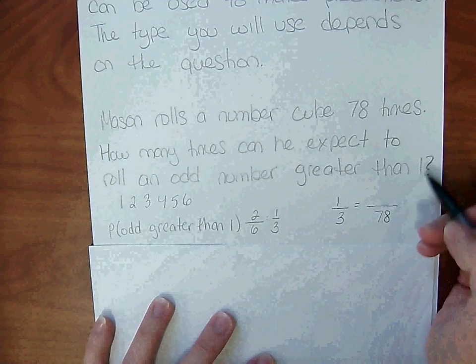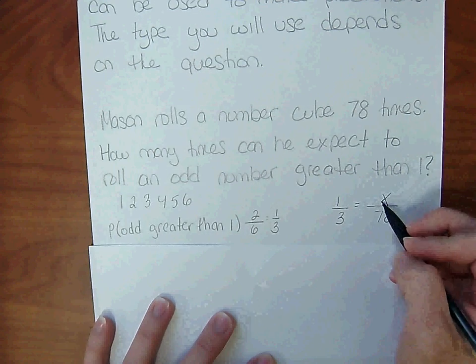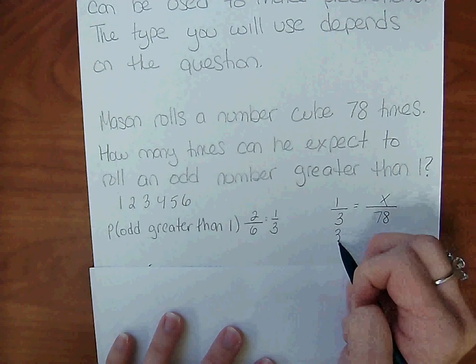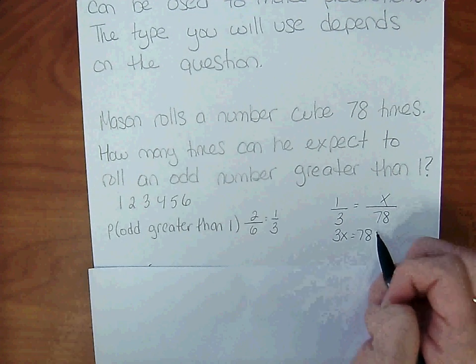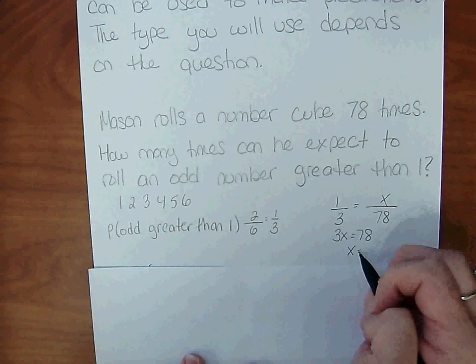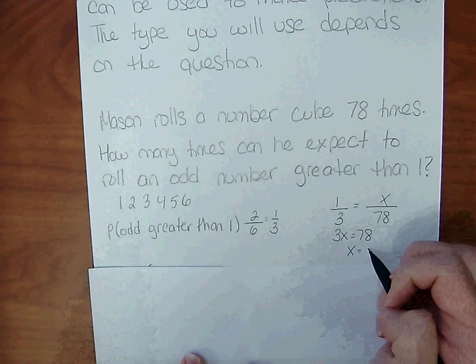And x is going to go in our numerator because that represents the number of times that's going to happen. So solve your proportion: 3x equals 78. So Mason can expect to get an odd number greater than 1, 26 times.